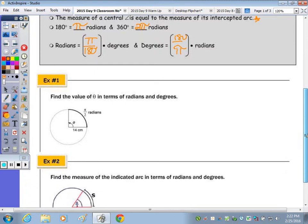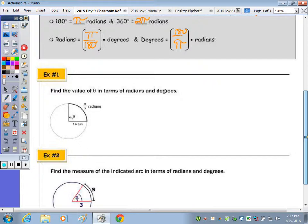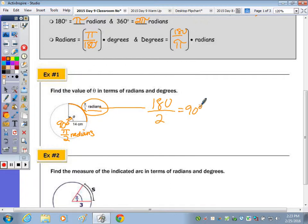So if I look at question number one, it doesn't say to find the length of an arc yet. We'll get to that on the back. It just wants the value of theta in terms of radians and degrees. So if I'm given an arc measured as pi over 2 radians, what's the central angle? 90 degrees. Or how many radians? Pi over 2. It's the same. And the easiest conversion to go from radians to degrees is to substitute 180 for pi. And 180 over 2 is 90.